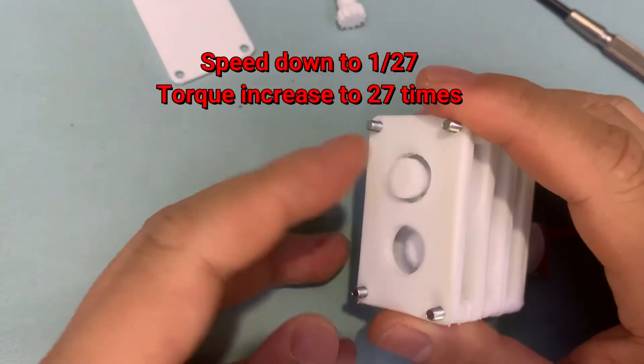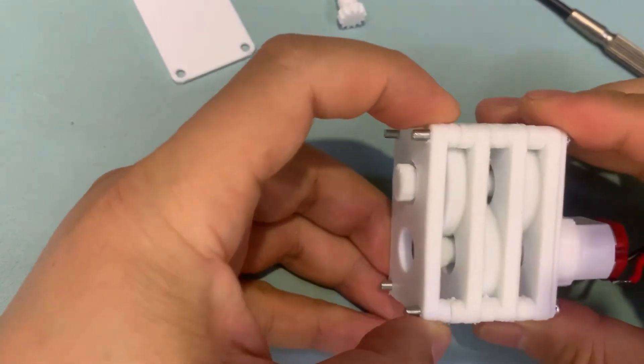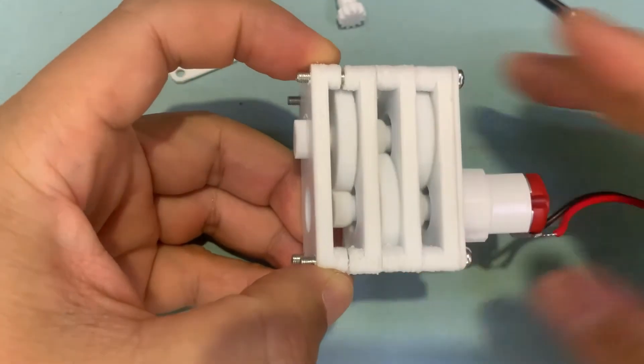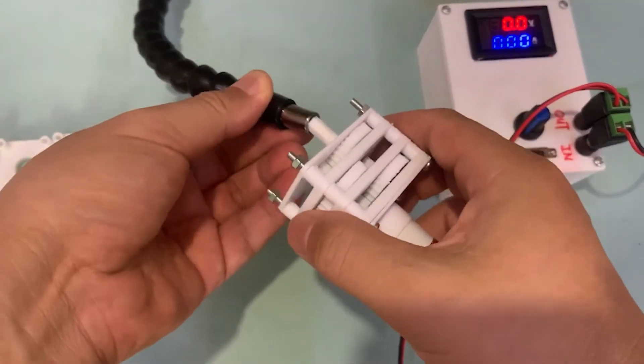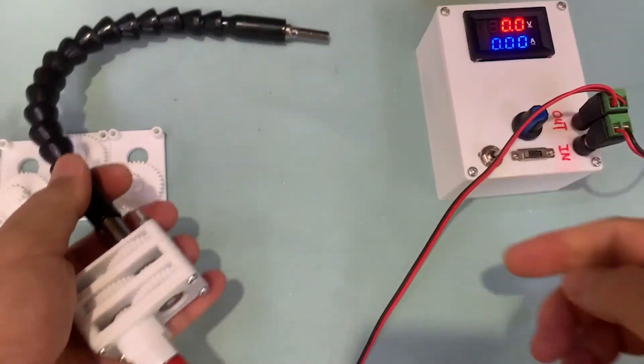The speed should down to 1 to 27. The torque should 27 times as input. You can stop the start motor easily, but it is difficult to stop the final output shaft.